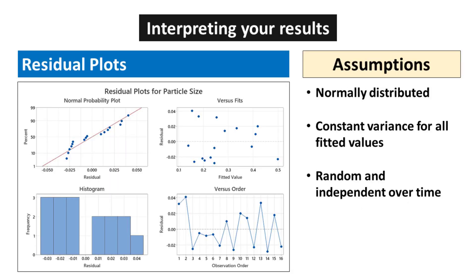For the Normal Probability Plot, the points roughly follow a straight line, so we can assume that the residuals do not deviate substantially from a normal distribution. Upon examination of the data, it is evident that the constant variance assumption remains unviolated. Additionally, the residuals in the plot fluctuate in a random pattern around the center line.